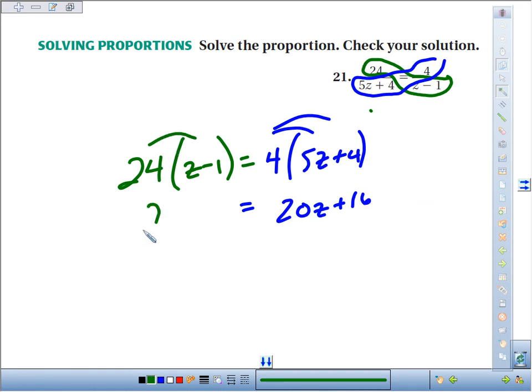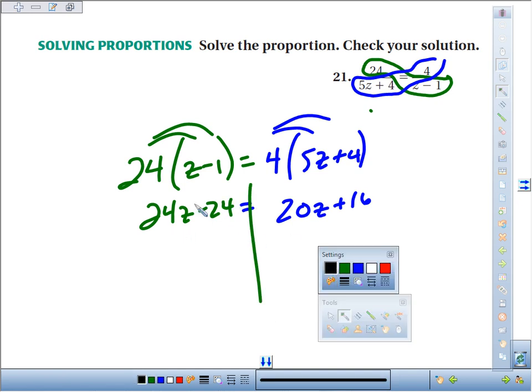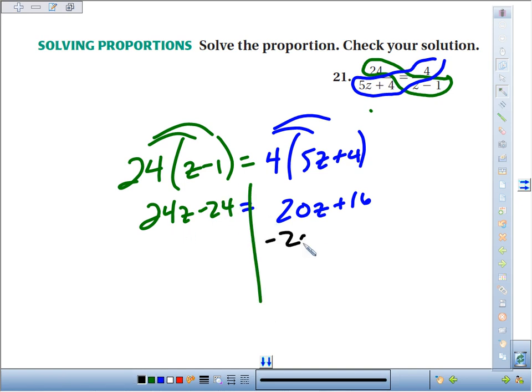On the left hand side of the equation, 24z and 24 times negative 1 is negative 24. Getting all variables on one side, I'll choose the left since there's more to begin with, so I'll subtract 20z. We get 4z minus 24 equals 16.